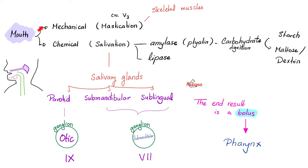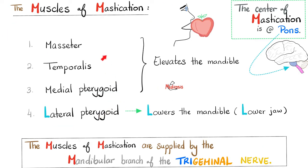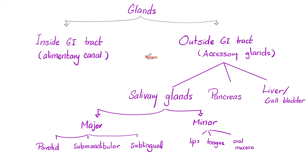Let's start in the mouth. The motility in the mouth is mastication — thank you, mandibular nerve. The secretions of the mouth come from the salivary glands — don't forget the minor salivary glands as well. The main enzyme here is salivary amylase and a tiny amount of lingual lipase. Here are the four muscles of mastication, all supplied by the mandibular branch of the trigeminal nerve. The center of mastication is in the pons, but the center of swallowing is in the medulla. The center of vomiting is also in the medulla. The center for defecation is in the conus medullaris of the spinal cord. We have glands inside the alimentary canal, and outside the GI tract — the accessory glands: salivary glands, pancreas, liver, and gallbladder.